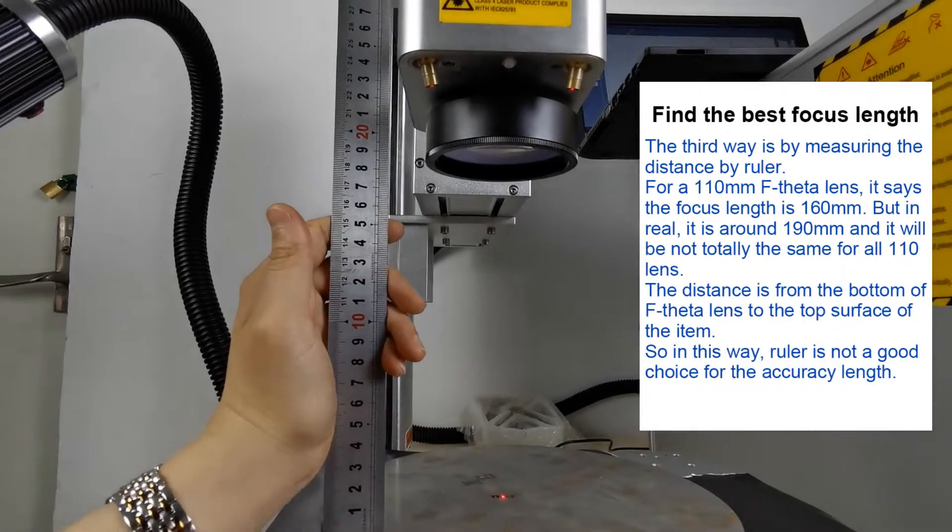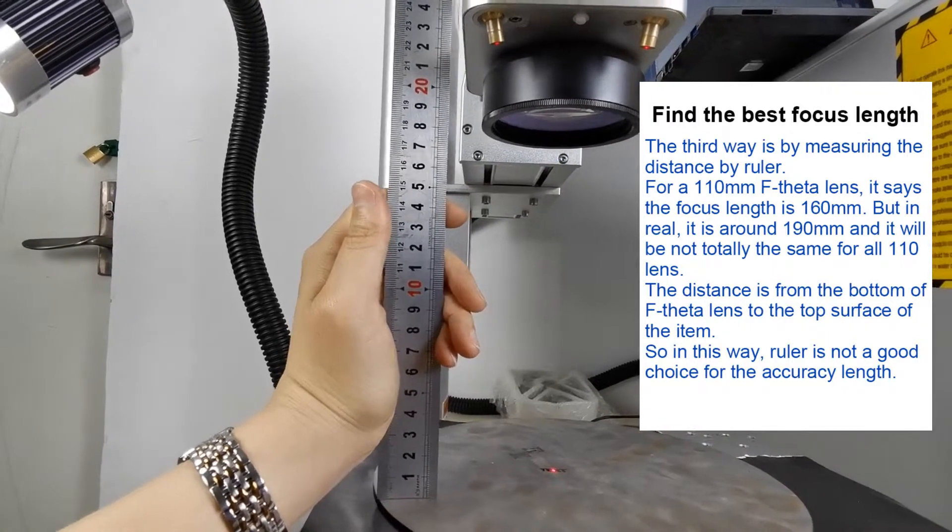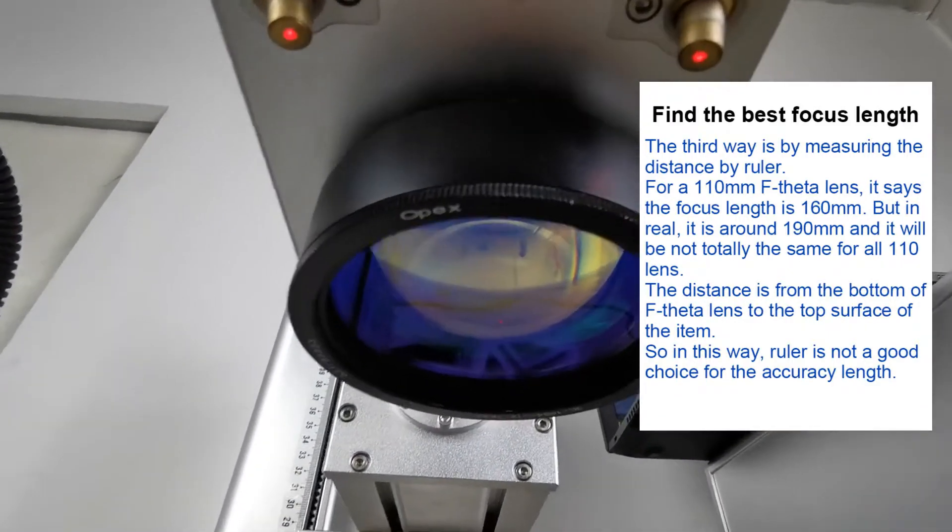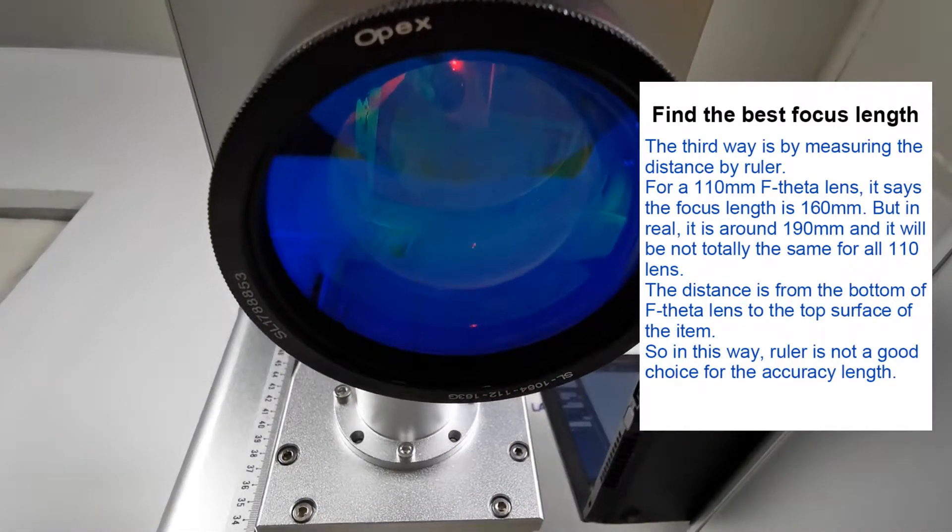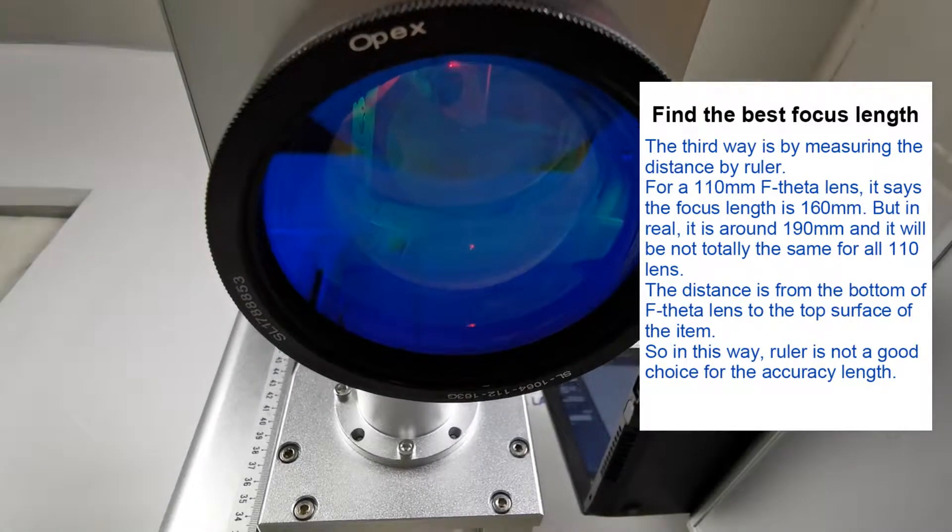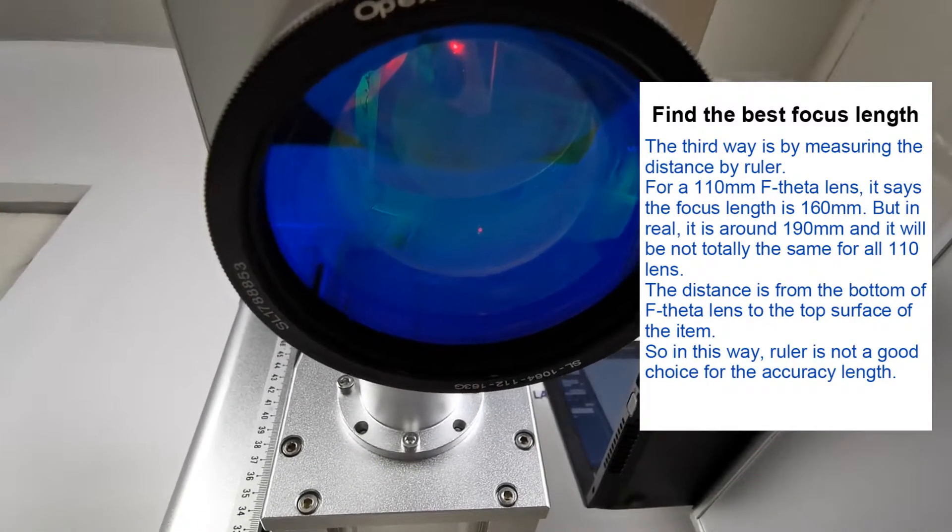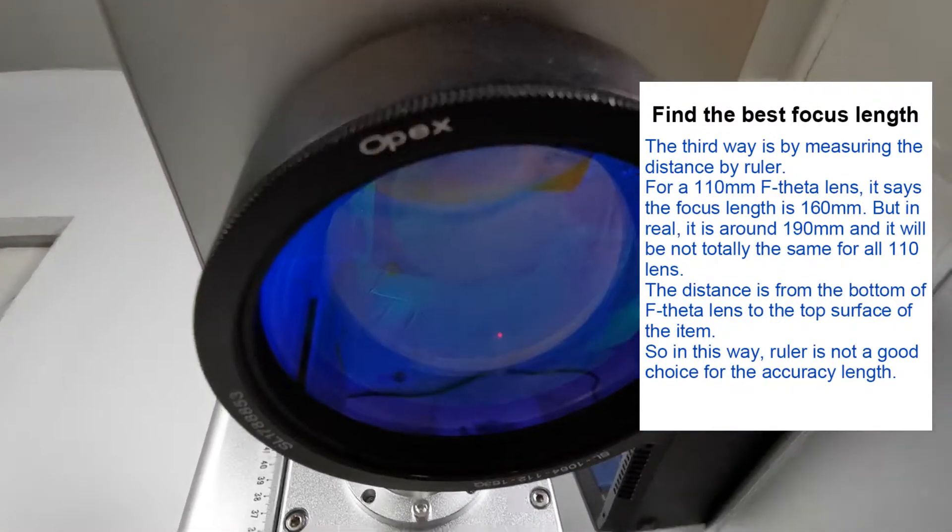The third method is by the ruler, but it's not quite accurate because you can see the bottom data of the lens. For example, the F-theta lens working area will be 112 millimeters and the distance will be 163 millimeters.